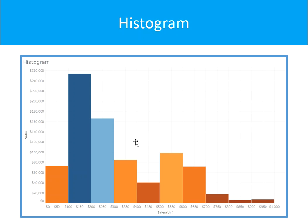The histogram is a visual representation of the distribution of data. Tableau basically divides your measures into discrete intervals or bins. This is very useful when you want to analyze how the data is actually distributed. What you need here is one measure and a bin field.